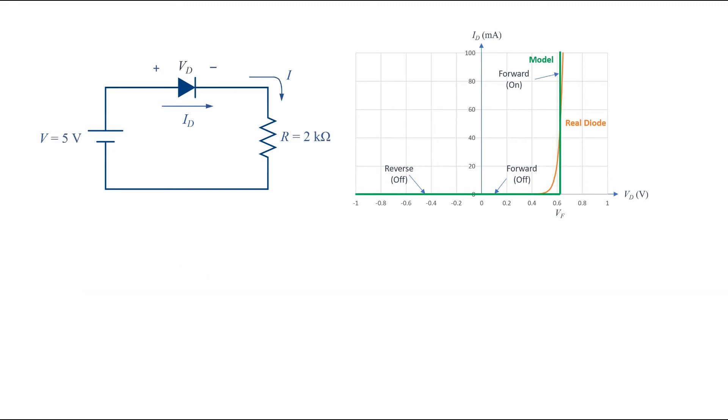Let's calculate the current in this circuit. The diode is in forward bias, because the positive side of the battery is connected to the anode and the negative side to the cathode.